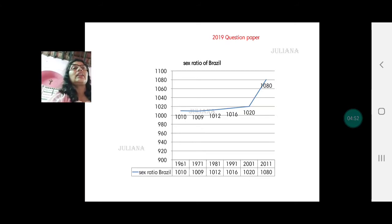The last census of Brazil was carried out in 2010, but the figure here is 2011, that's fine. On the y-axis you get the number of females: 900, 920, 940, 960, and so on and so forth.